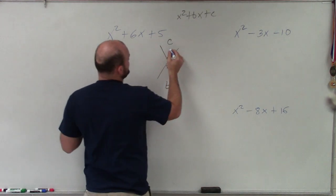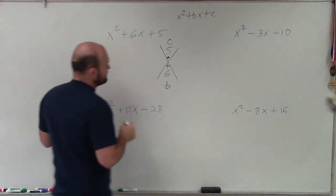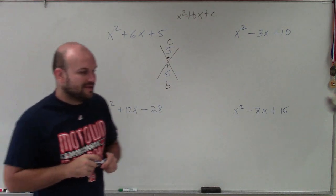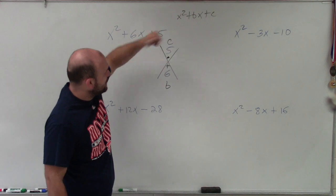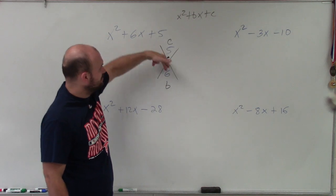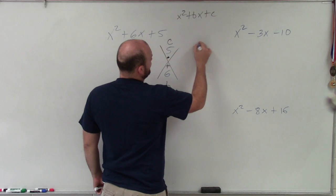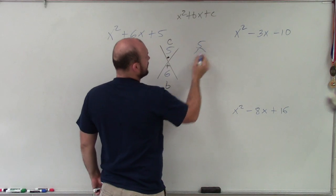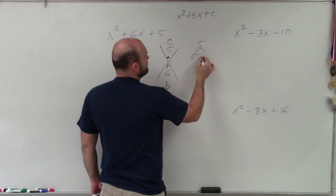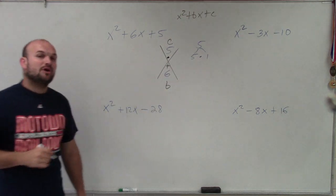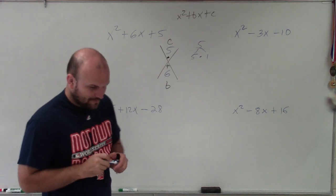So c in this case is 5, and b in this case is 6. Basically, what we want to be able to do is say: what two numbers multiply to give us 5, but then add to give us 6? To do that, we take the number 5 and say what are the two numbers that multiply to give us 5. Well, 5 is a prime number, so the only two numbers that multiply to give us 5 are 5 and 1.